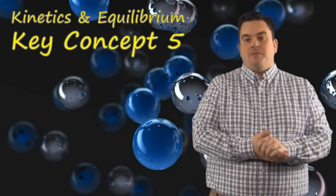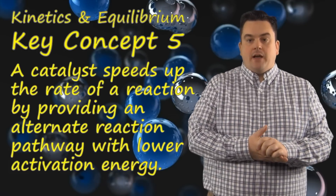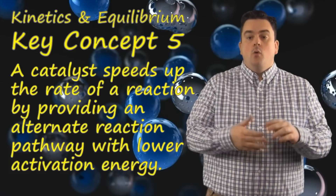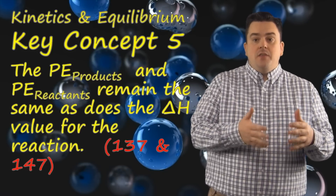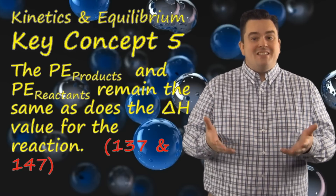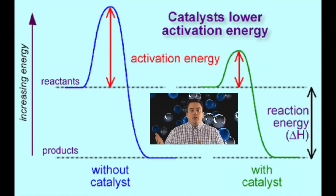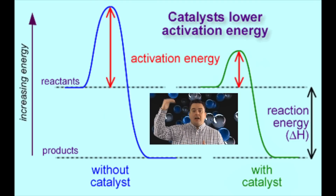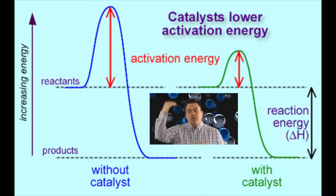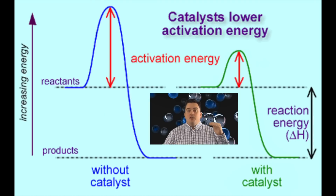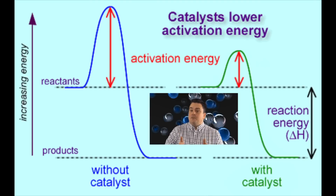Kinetics in Equilibrium, Key Concept 5. A catalyst speeds up the rate of a reaction by providing an alternate reaction pathway with a lower activation energy. The PE of the products and the PE of the reactants remains the same, as does the delta H value for the reaction. On the potential energy diagram, without a catalyst the hill is very tall — a very high activation energy to get over. With a catalyst, that hill comes down and gets lower. The beginning reactants and ending products remain the same and do not change. Because delta H is PE of the products minus PE of the reactants, that value would not change either.